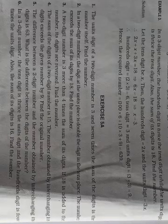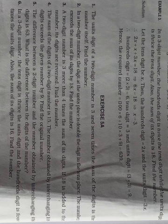As you can see, exercise 5 becomes 4 questions. The sum of the digits of a 2-digit number is 15. The number obtained by interchanging its digits exceeds the given number by 9. Find the original number.